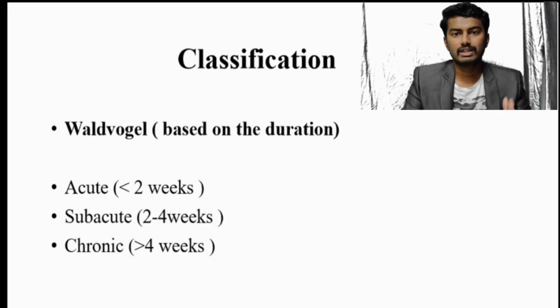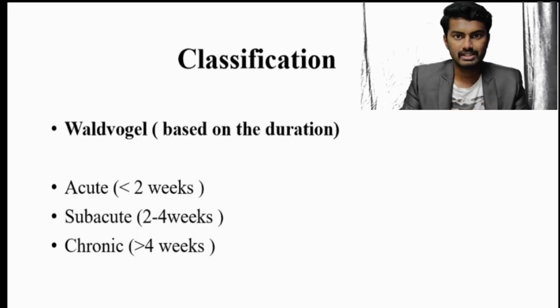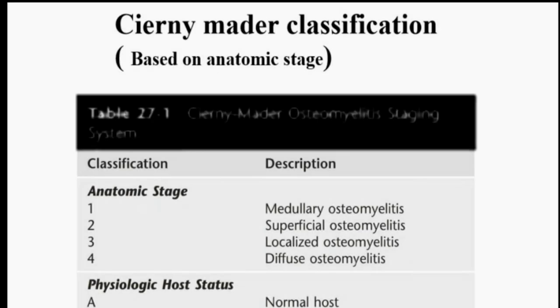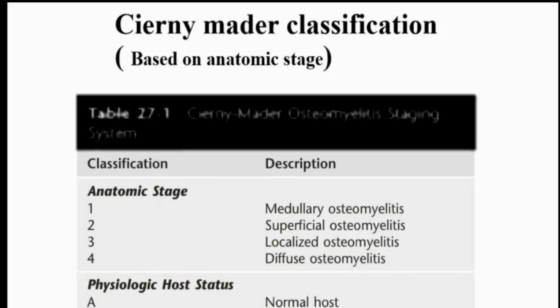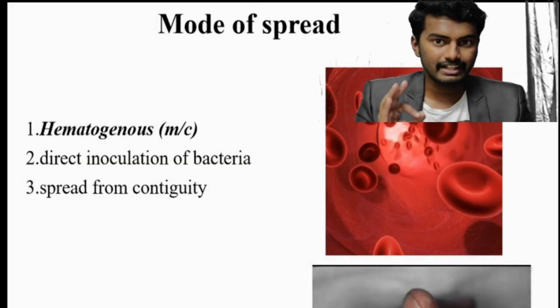Osteomyelitis is classified in two ways. Based on duration, using the Waldvogel classification: less than two weeks is acute, two to four weeks is subacute, and more than four weeks is chronic. The Cierny-Mader classification covers physiological host status — just remember that Type C means treatment is worse than the disease itself, so that condition should never be treated.